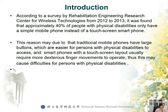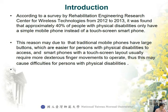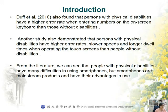According to a survey by the Rehabilitation Engineering Research Center for Wireless Technology from 2012 to 2013, it was found that approximately 40% of people with physical disabilities only have a simple mobile phone instead of a touch screen smartphone. The reason might be that traditional mobile phones have large buttons, which are easier for a person with a physical disability to access. A smartphone with a touch screen layout usually requires more dexterous finger movement to operate, which might cause difficulty for a person with a physical disability. The study also found that persons with a physical disability have a higher error rate when entering numbers on the on-screen keyboard than those without a disability.